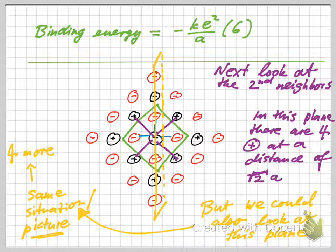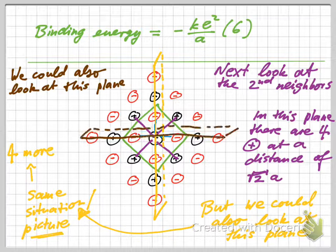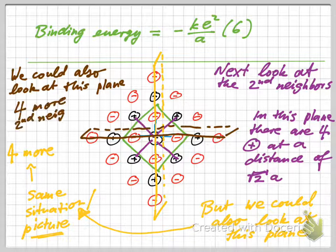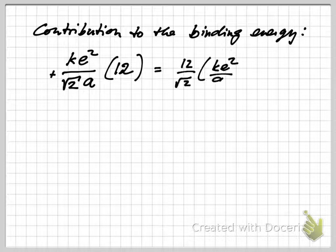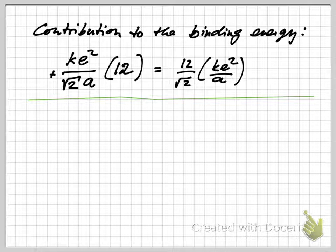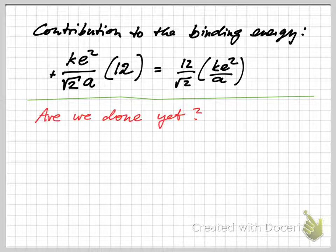It's sort of the same picture and we get therefore four more second neighbors. And then of course we have a third plane that we could look at, namely this plane, and the situation again would be the same and we get four more second neighbors. So there's going to be 12 positive sodium ions at a distance of the square root of two times a, and the contribution then to the binding energy is ke squared over square root of two times a all times 12, because we have 12 of these.